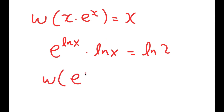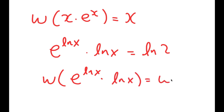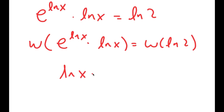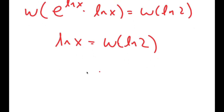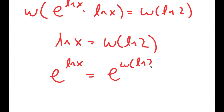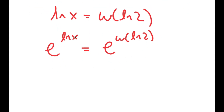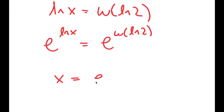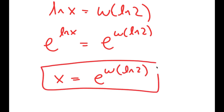Now I can use the Lambert W function on both sides. So I get W of ln x times e to the power of ln x equals W of ln x, which equals W of ln 2. To further simplify, I'm going to take e to the power of both sides, so the e and ln cancel out, and I'm left with x is equal to e to the power of W of ln 2. So this is my answer.